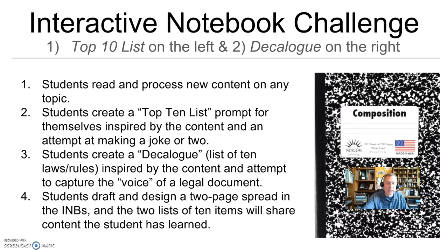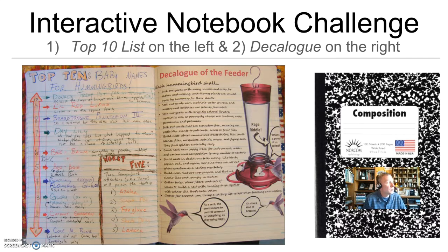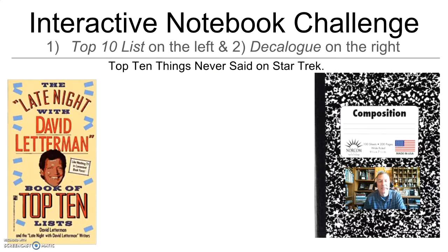So, interactive notebook pages. I'm going to do something different today — we're going to go right for the main one. Here's my final draft. On the left you're going to see my top 10 baby names for hummingbirds. On the right you're going to see my decalogue. Normally you'd see my rough draft first — trust me, it existed — but I thought I'd jump right in and show what the final is going to look like. We'll go into details.